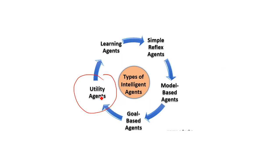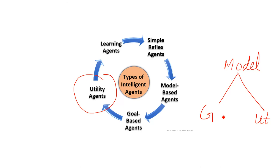Our focus here will be on utility, not the goal state. Model-based agents are divided into goal-based and utility-based. Goal-based and utility-based agents are extensions or expansions of model-based agents — they have all the properties of model-based agents plus their own. Here we focus on utility, even though we still have to reach our goal state. I will explain what utility is in this lesson.